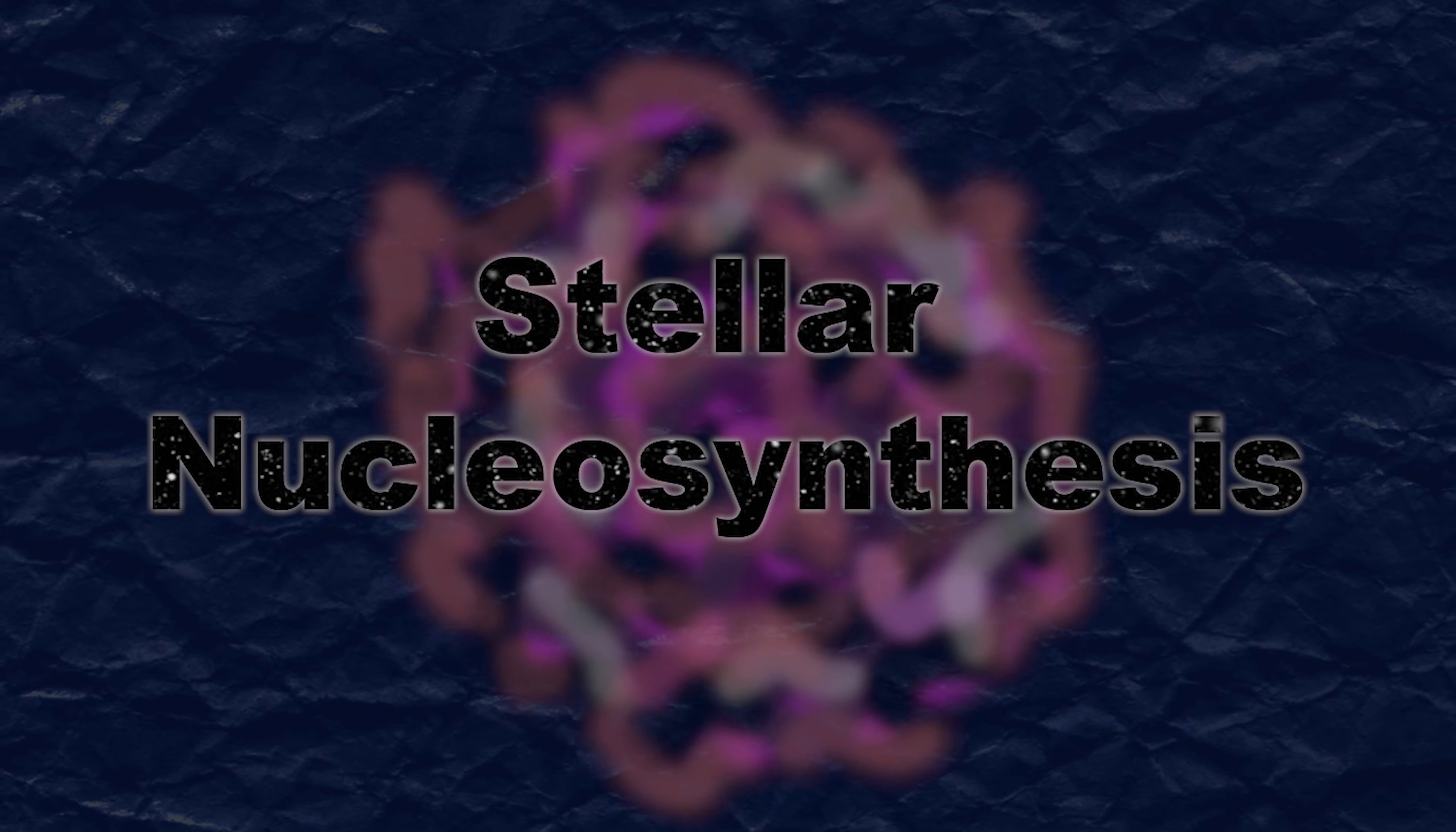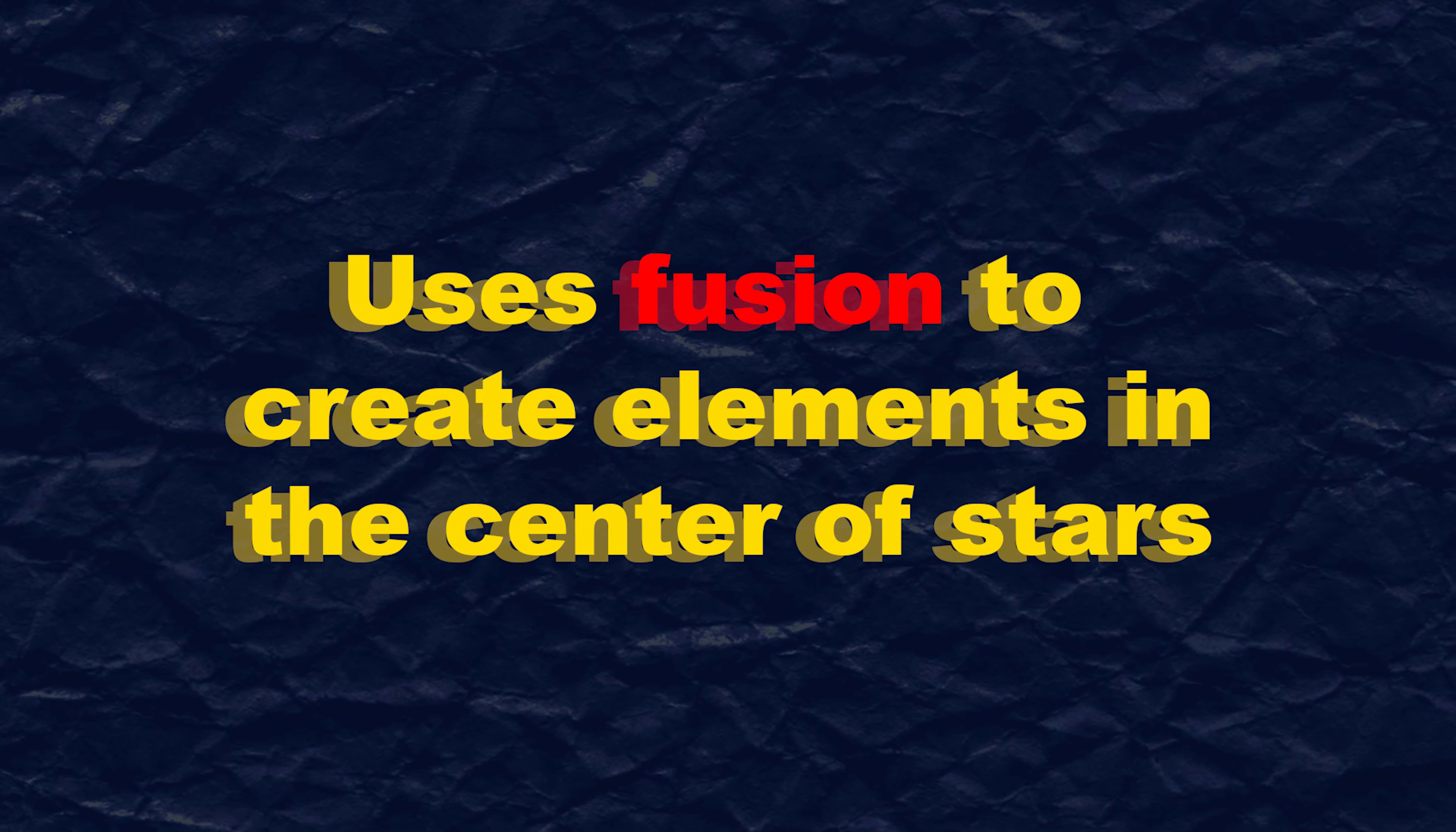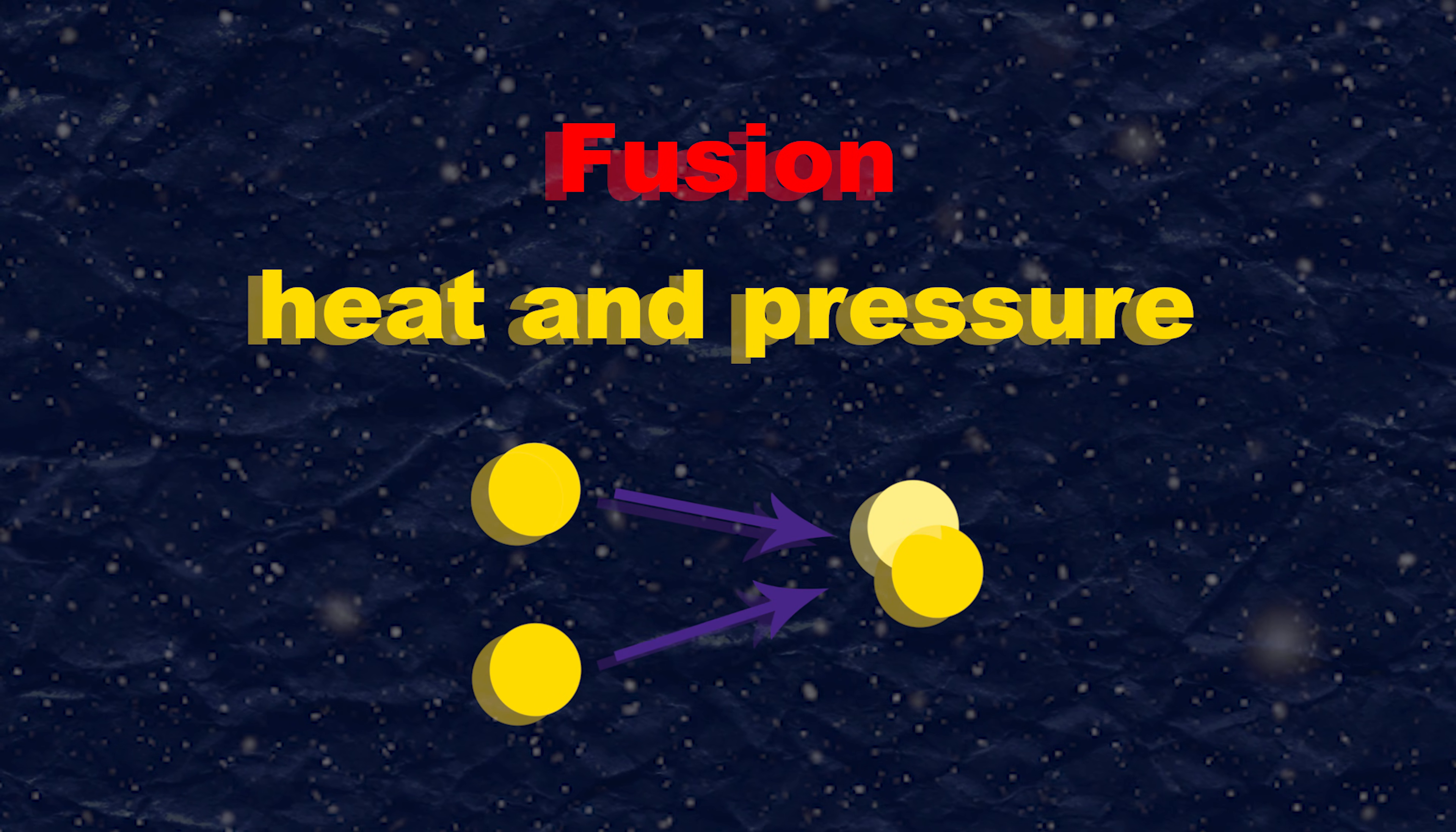Stellar nucleosynthesis is responsible for all elements between helium and iron on the periodic table. Stellar nucleosynthesis uses fusion to create elements in the center of stars. Fusion uses extreme heat and pressure to mash smaller elements together, forming larger ones.